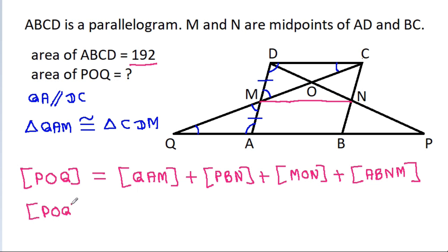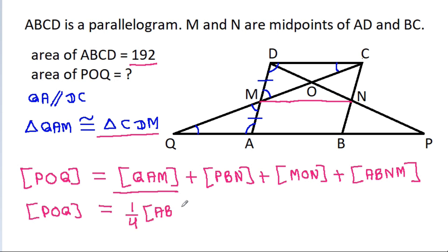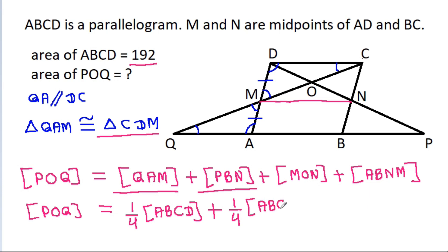So, the area of POQ is equal to: the area of QAM, which equals the area of CDM, that is 1/4 times the area of ABCD. And the area of PBN will also be equal to 1/4 times the area of ABCD.